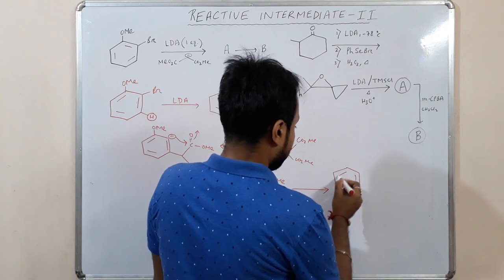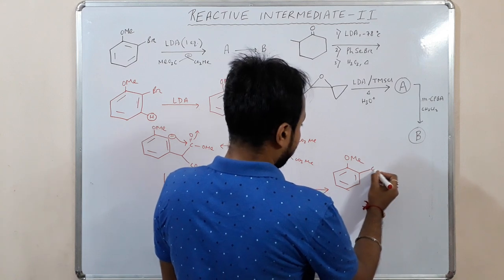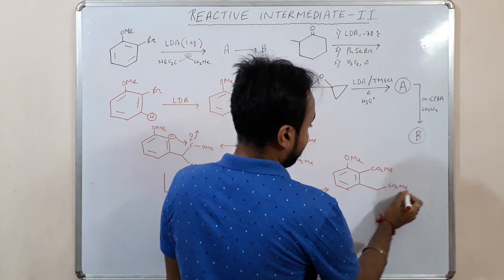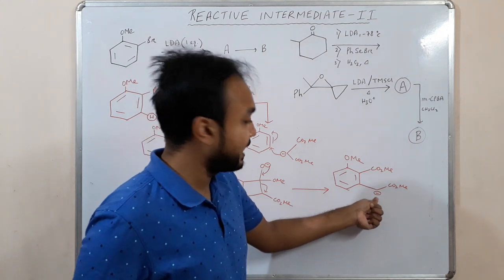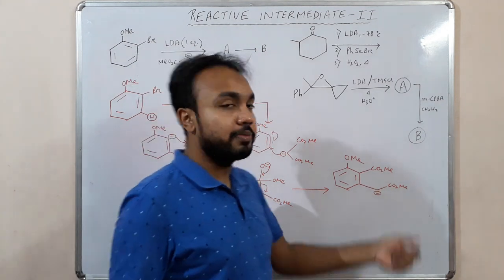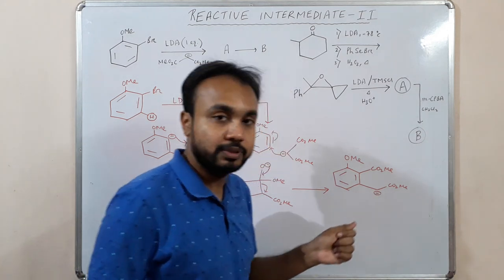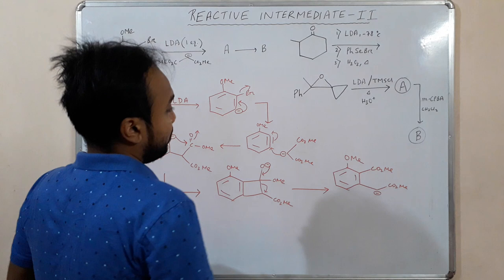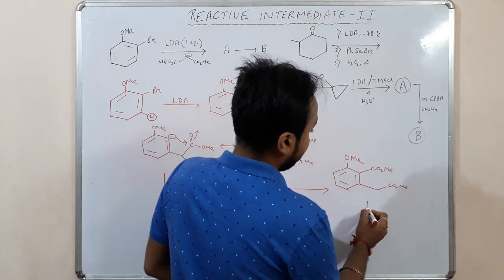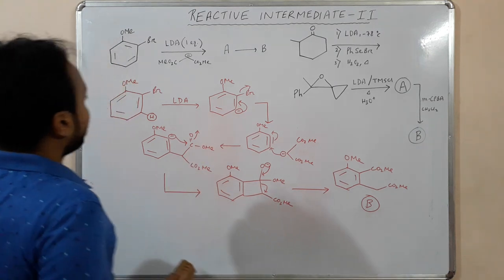The product comes out with CO₂Me groups and a negative charge. This negative charge is stabilized because the adjacent CO₂Me is an electron withdrawing group. On acid workup, the negative charge is protonated, giving us the final product.